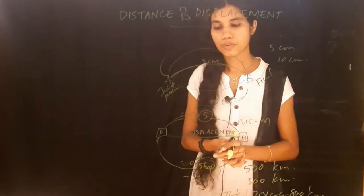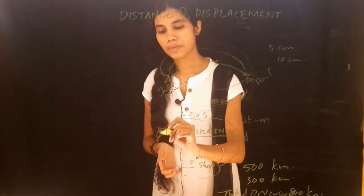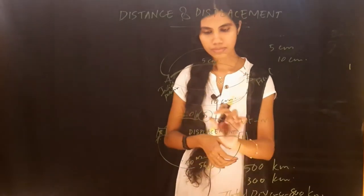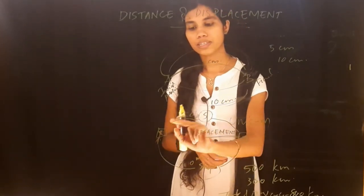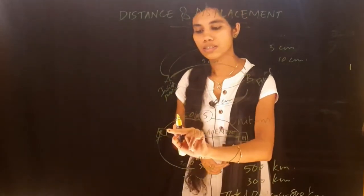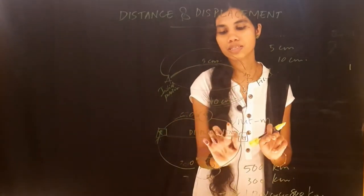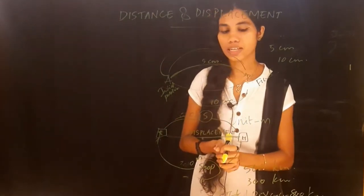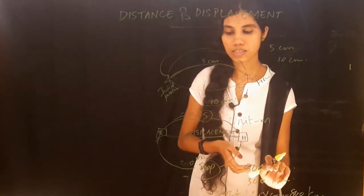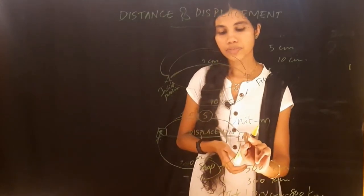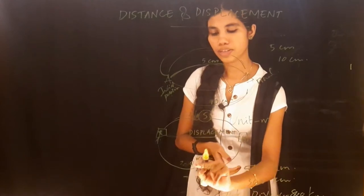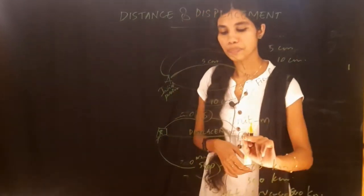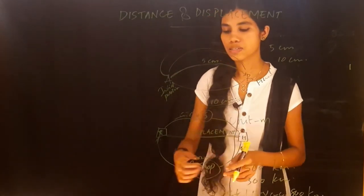Now we have another example. We are going to the hospital. I went to the hospital — it seems like 100 km distance. I have to reach some point, about 500 km. The road going to the hospital is 100 km, but in the way there is a shortcut. You can see a shortcut — the road on the way is 300 km.